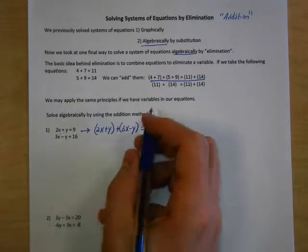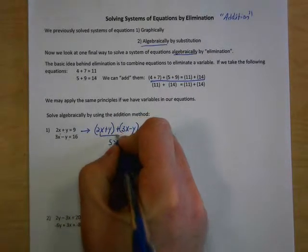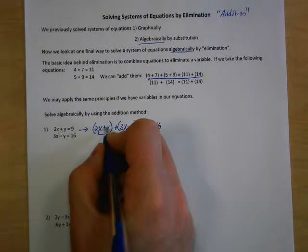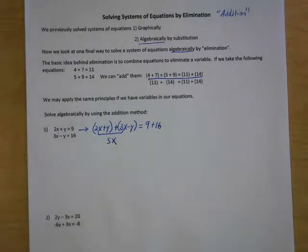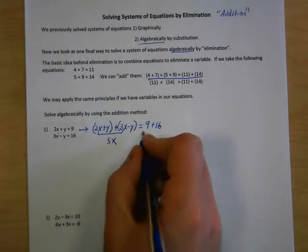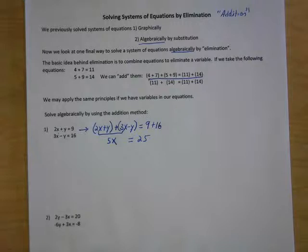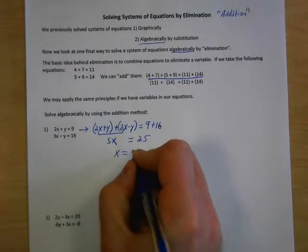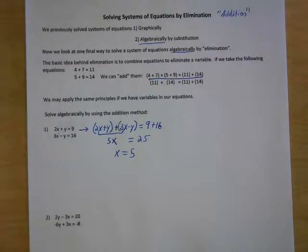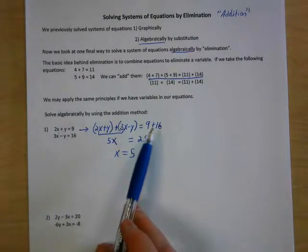Combining like terms, 2x plus 3x is 5x. Positive y plus negative y cancels off to 0. So we get 5x equals 25. Dividing by 5, we end up with x equals 5. That turned into a very easy equation after that first step of adding the left-hand sides together and equating them to the sum of the right-hand sides.